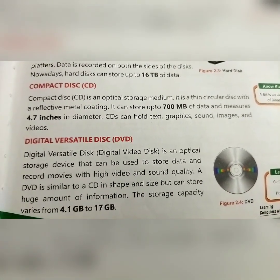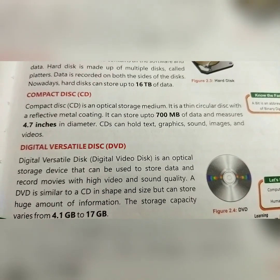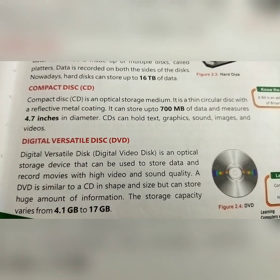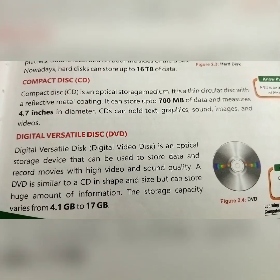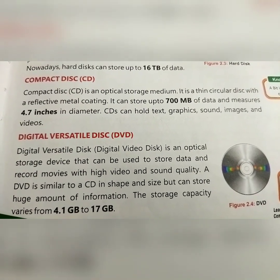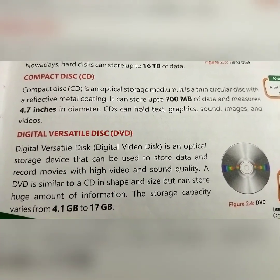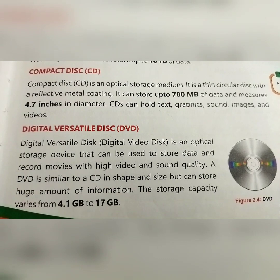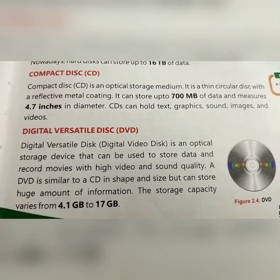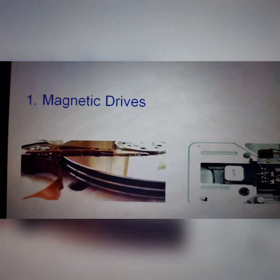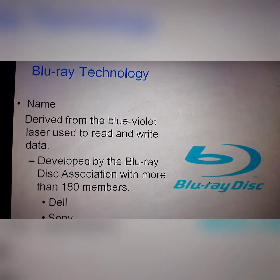Next storage device is the Digital Versatile Disk — DVD. A DVD, also called a digital video disk, is an optical storage device that can be used to store data and record movies with high video and sound quality. A DVD is similar to a CD in shape and size but can store a huge amount of information — storage capacity varies from 4.1 GB to 17 GB. You can also see here a picture of a magnetic drive storage device, and next is the Hard Disk and Blu-ray Disk.